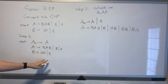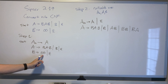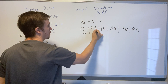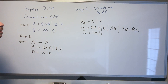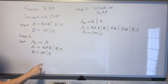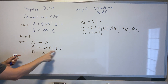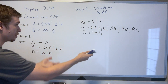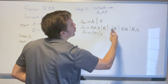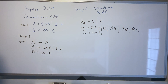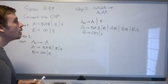For the B variable, there are no nullable variables on its right-hand side, so those rules get copied without changes. This grammar is equivalent to the original because applying a variable going to empty is now simulated by the new rules we just created.